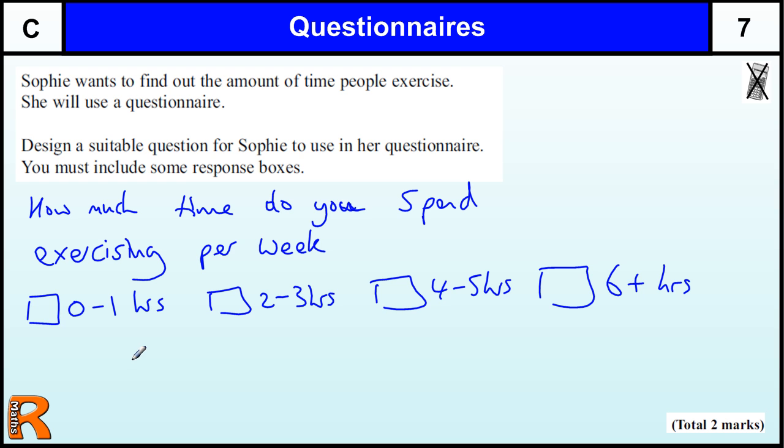And everything is covered. So if they spend no time, they could be in this box. Or if they spend lots and lots of time, they could be in this box, and everything in between. So that's a typical question you might ask in a questionnaire, how you set it out with response boxes.